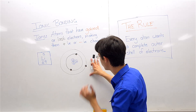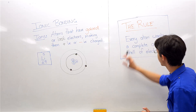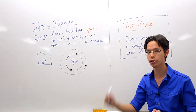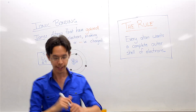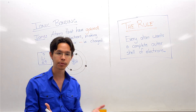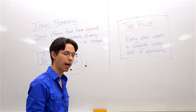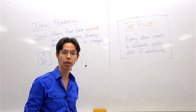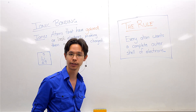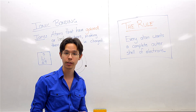The rule when it comes to ions is that every atom wants a complete outer shell of electrons. Sometimes this is called the octet rule. However, this is a little more general because some atoms don't have access to eight. Lithium is one of those exceptions.